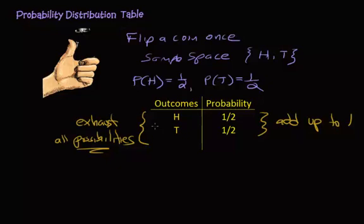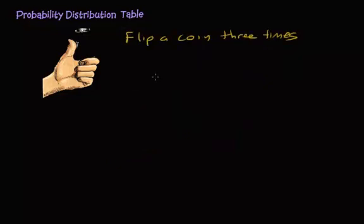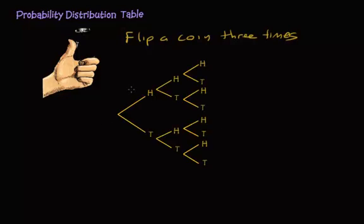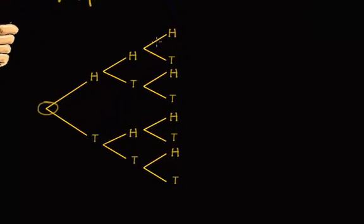Let's take the coin flip example and extend it — let's flip a coin three times. In order to figure out the sample space for flipping a coin three times, it's best done using a tree diagram. To create the sample space, you follow the branches from start to the end, and as you finish, you write down every letter you pass — that's going to be your sample point.